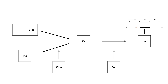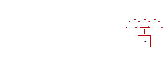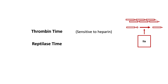Our focus here is on the action of thrombin converting fibrinogen to fibrin. This process is measured by both the thrombin time and the reptilase time. The thrombin time uses dilute human or bovine thrombin and is sensitive to heparin and other direct thrombin inhibitors.